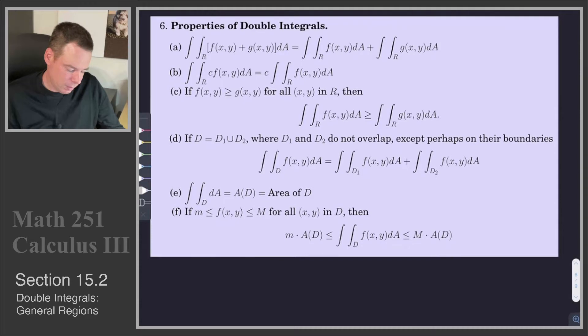The fourth property says that if we've got a region that we can split up into two smaller regions that don't overlap, except possibly they may have common boundary, then if I want to integrate the function over the entire domain, it suffices just to integrate over each of the individual domains and then piece the results together.